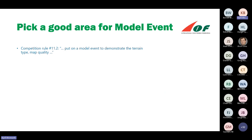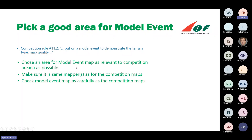When I come into the picture as an SEA, the competition areas are usually already decided. But regarding the model event area — per rule 11.2, you shall put on a model event to demonstrate the terrain — I try early to agree with the organizers which area to choose, and to make sure they will use the same mapper or mappers as for the competition maps. Many times we forget to concentrate on the model event map, which is not smart, because this map is very carefully looked at by teams and runners. You will get a lot of questions if the model event map is not as good as it should be.